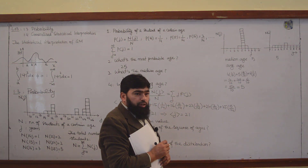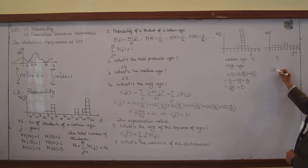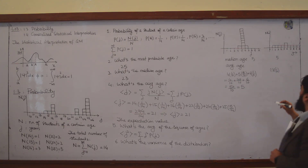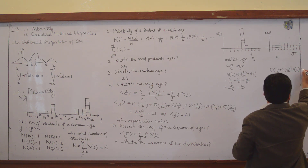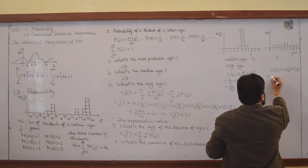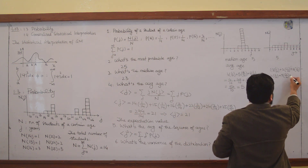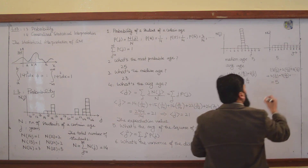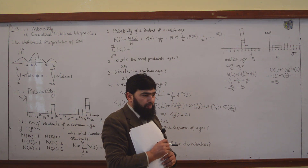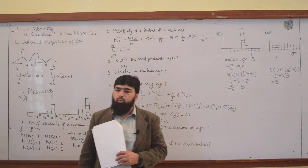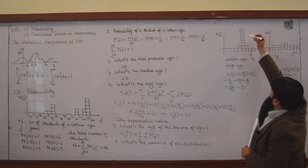Now for the second distribution: age one times 1/10, plus age two times 1/10, plus age three times 1/10, plus age four times 1/10, plus age five times 2/10, and so on. If you calculate, the average age also comes out to be five. So both the median and the average are the same, while the distributions are different.